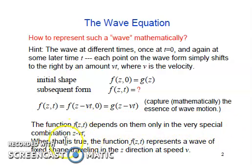When it is true, the function f(z,t) represents a wave of fixed shape traveling in the z direction at speed v.